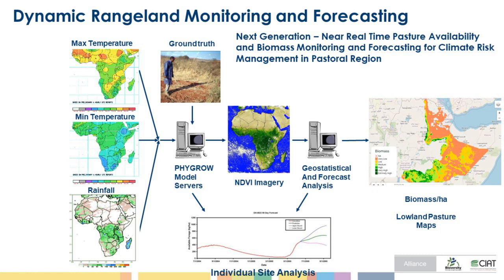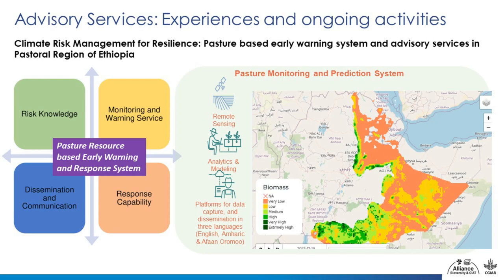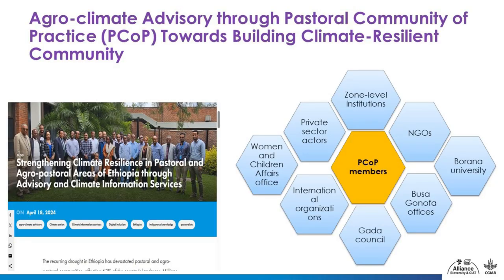We have biomass information per hectare, water information, and pasture information. What we were also missing is agro-climate advisory — interpreting the advisories provided by the National Meteorology Agency into context-specific guidance for pastoralists. We also work with the Ethiopian Institute of Agriculture Research and the Pastoralist Directorate. We have established what we call a pastoral community of practice, because this information needs to be integrated with the community so we also incorporate indigenous knowledge alongside these products.